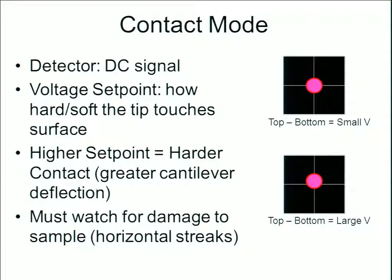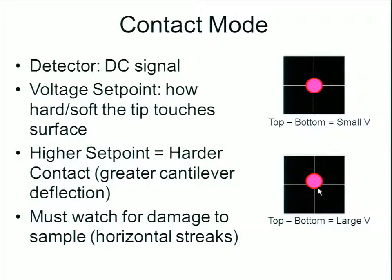The higher the set point, the harder the contact — in other words, a greater cantilever deflection. We are pressing the cantilever harder to apply a greater force down to the sample. When you do this, you need to watch for damage to your sample, which would look like horizontal streaking in your image once the scan is done. A lower set point would have a small voltage, and a higher set point would have harder contact and greater cantilever deflection.